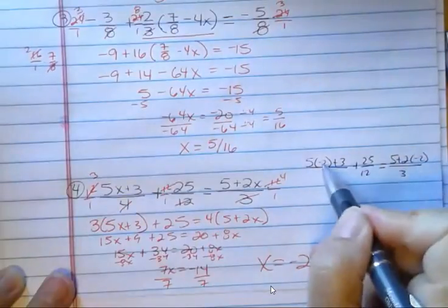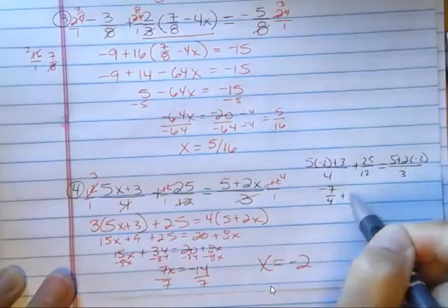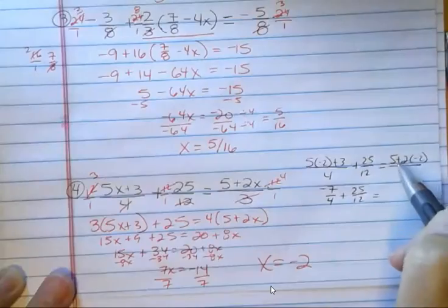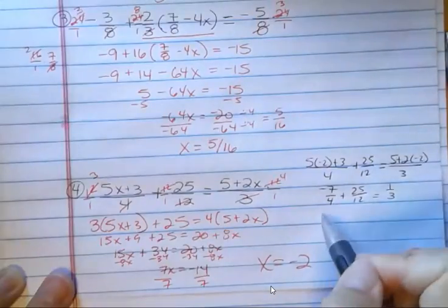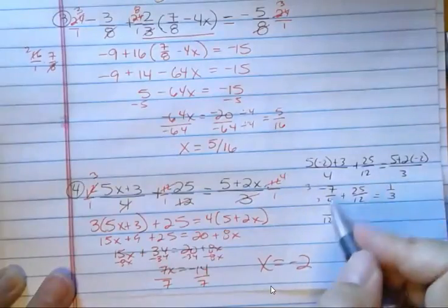So that's negative 10 plus 3, which is negative 7 fourths. And this is 5 plus negative 4 or one third. So let's change this into 12 by multiplying the top and the bottom by 3. And you get negative 21 twelfths plus 25 twelfths is supposed to equal one third.